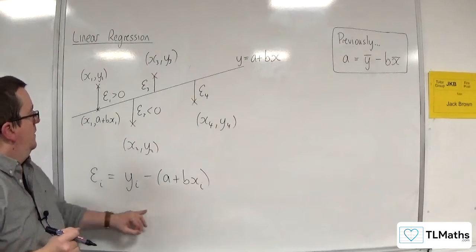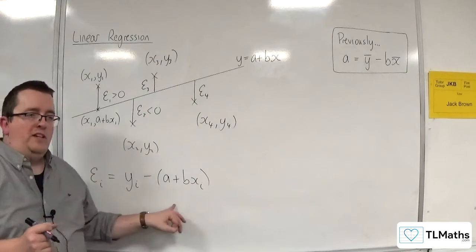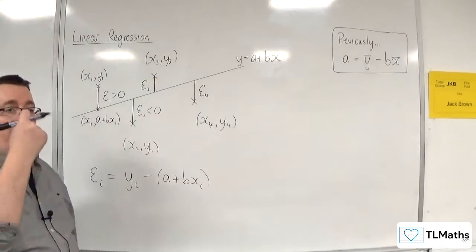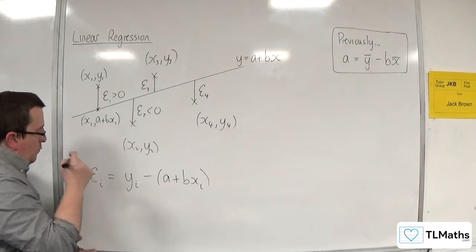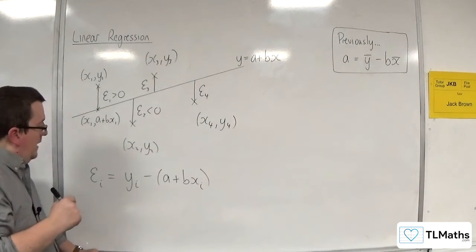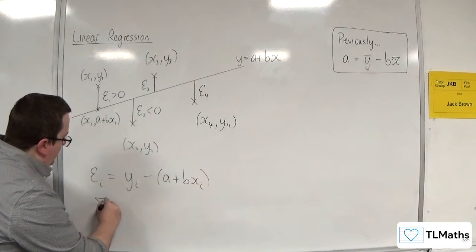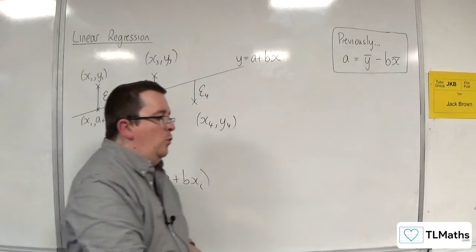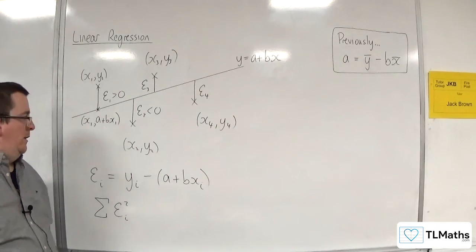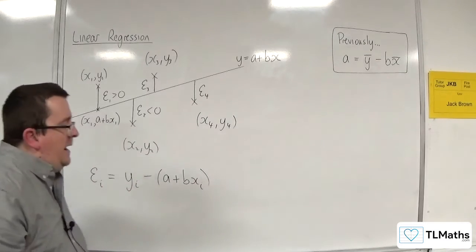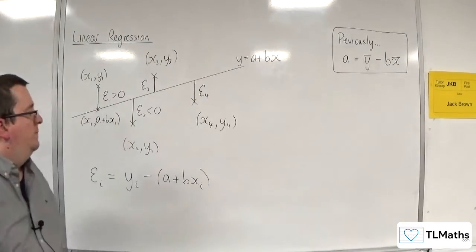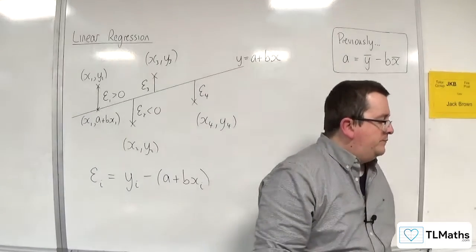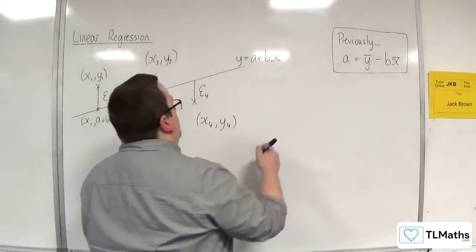So that is how we can calculate the residual for each of your data points. What the least squares regression line does is it minimises the sum of the squares of the residuals — that's what we saw in the extension video near the beginning of this section, and that's how we derived the least squares regression line. In the exam, you may be asked to calculate a residual as part of a question. But there is one other fact that you should be aware of with the residuals, and that is what they all add up to.